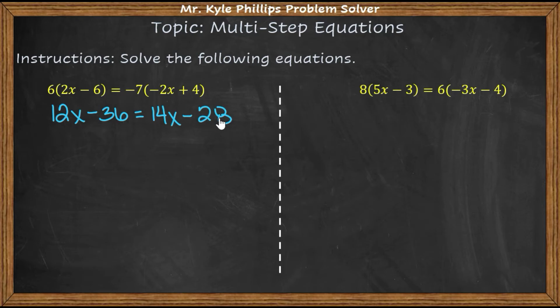Now what we want to do is isolate. So we want all the x's on one side and all the numbers on the other. Typically what I do is I'm always going to move the smaller x. That way I don't have to worry about working with a negative. So here I will subtract 12x from both sides.